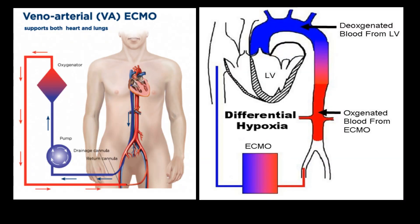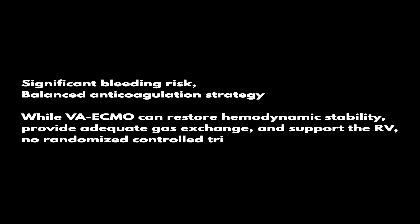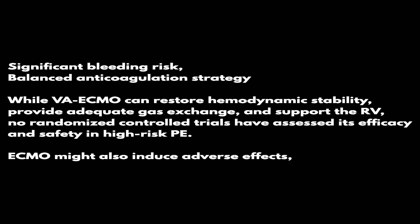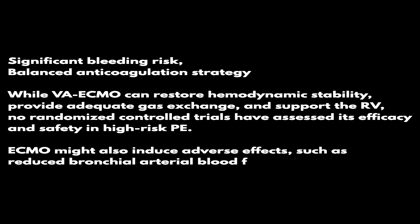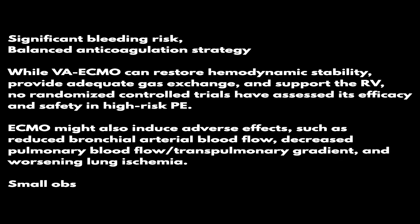Venoarterial extracorporeal membrane oxygenation (VA ECMO) can provide effective circulatory support for patients with RV failure and obstructive shock, particularly for those unresponsive to treatment or with contraindications to thrombolysis. However, ECMO carries a significant bleeding risk, and a balanced anticoagulation strategy may be needed if lysis is absolutely contraindicated. While VA ECMO can restore hemodynamic stability, provide adequate gas exchange, and support the RV, no randomized controlled trials have assessed its efficacy and safety in high-risk PE. ECMO might also induce adverse effects, such as reduced bronchial arterial blood flow, decreased pulmonary blood flow, transpulmonary gradient, and worsening lung ischemia.